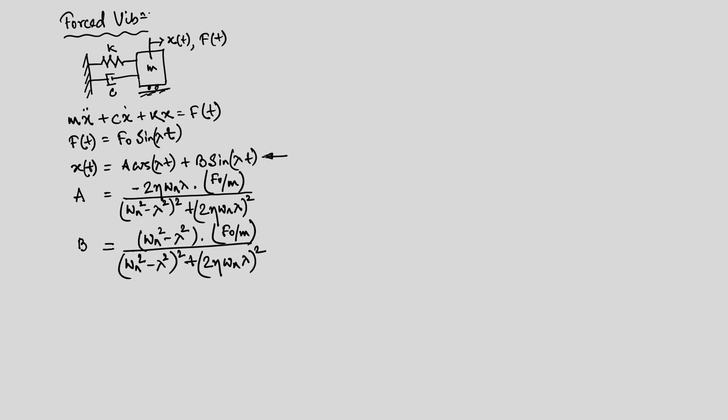Similarly, B equals omega-n squared minus lambda squared, divided by omega-n squared minus lambda squared whole squared plus 2 eta omega-n lambda whole squared, with F-naught over M in the numerator. These two constants are obtained from the initial conditions. Once we estimate them, we can write the expression for the response — this is the particular integral. For the total response, we sum it with the complementary function.